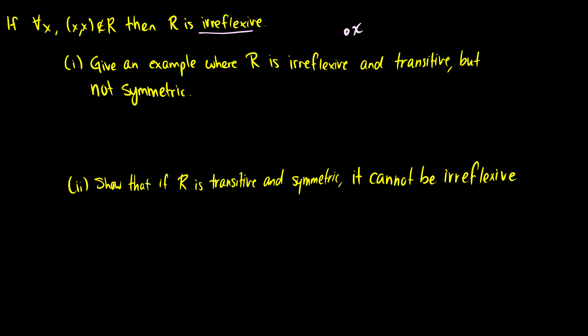For the first part, I want you to give me an example of a relation where R is irreflexive and transitive, but it's not symmetric. So nothing is related to itself. And there's some order to it, but there's no symmetry. When I think of irreflexive and things not relating to themselves, the first thing I think of is the less than sign or the greater than sign.